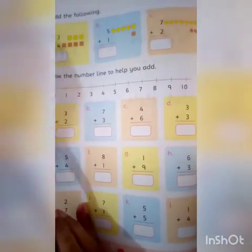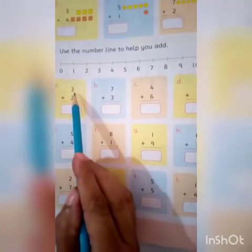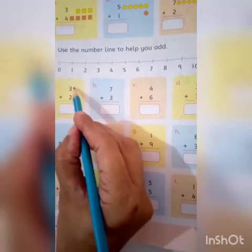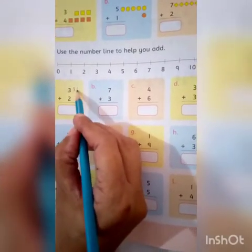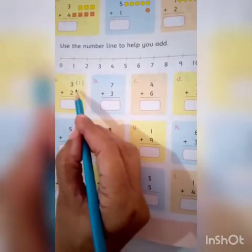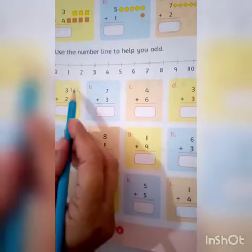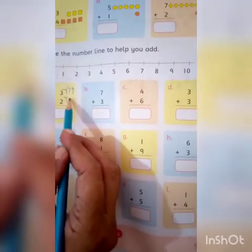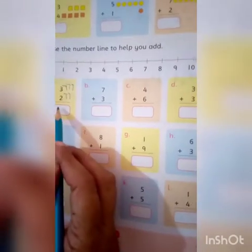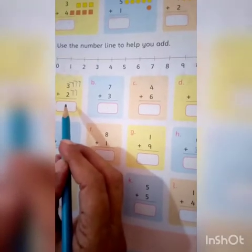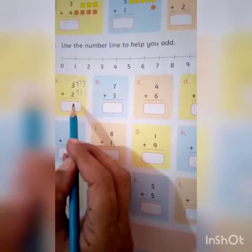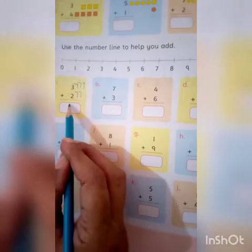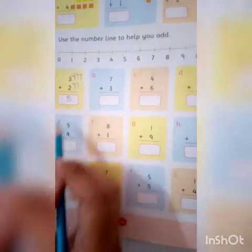A — what do you have to do? 3, sign plus 2. So, you will draw three sticks — bilkul 3 ke saamne — 1, 2, 3. And which number is below? 2. So draw 1, 2. Now you count them all: 1, 2, 3, 4, 5. So humara answer kya aya? 5 is the answer.